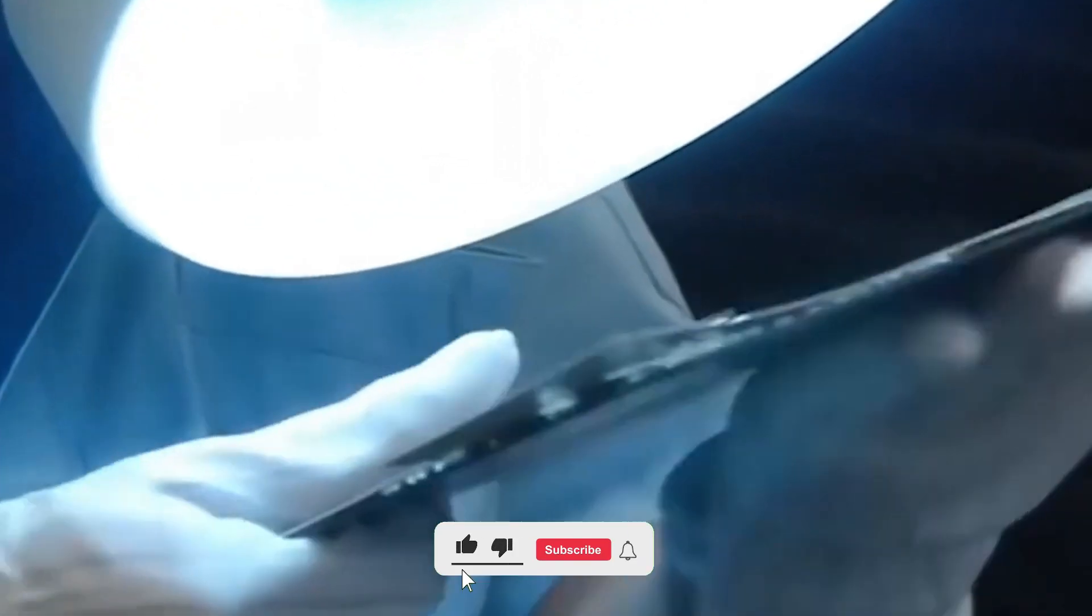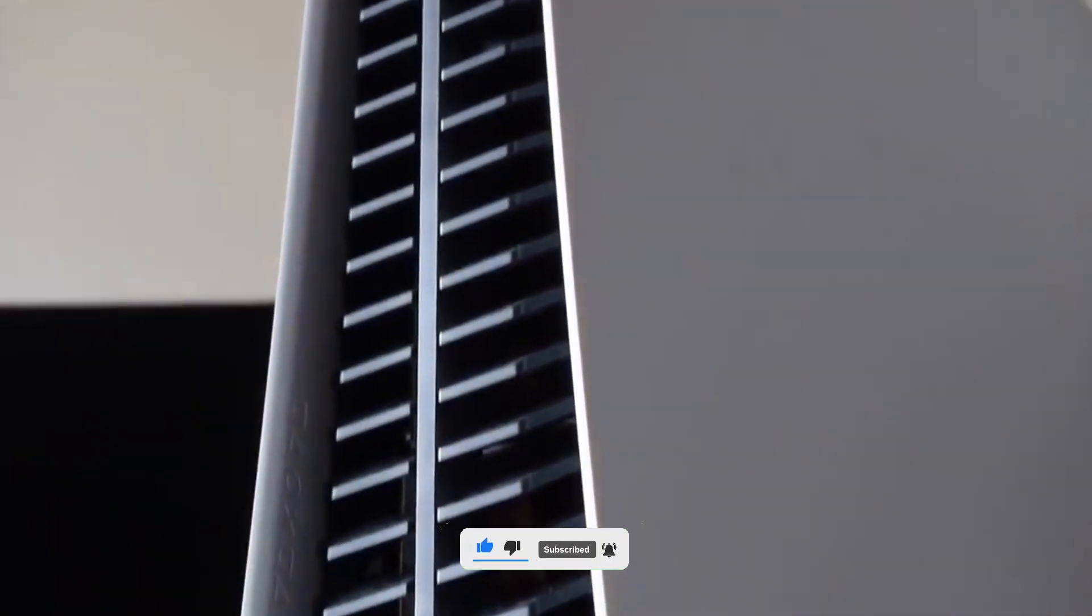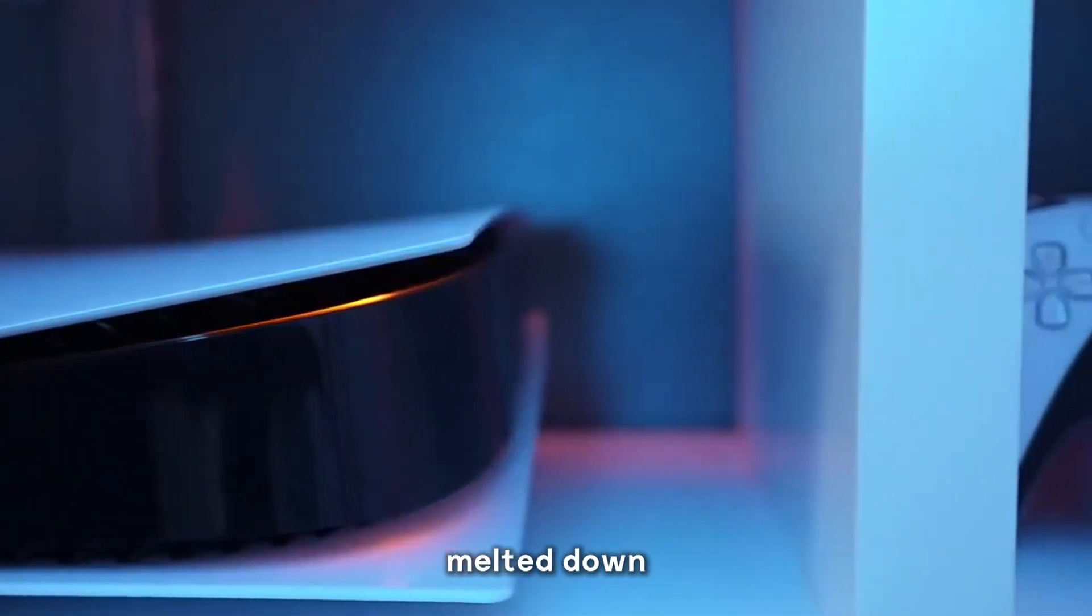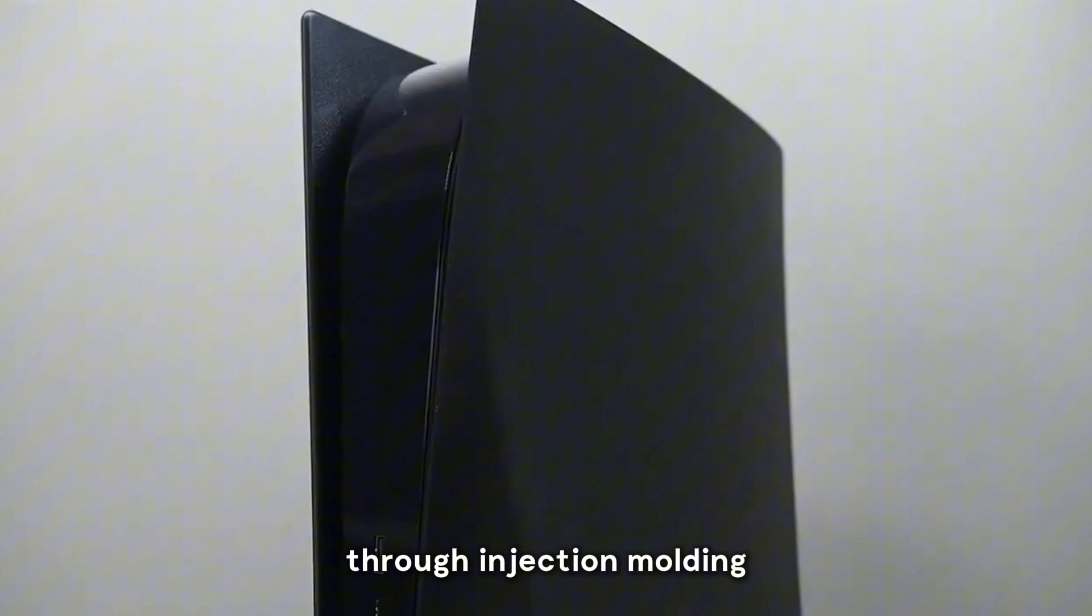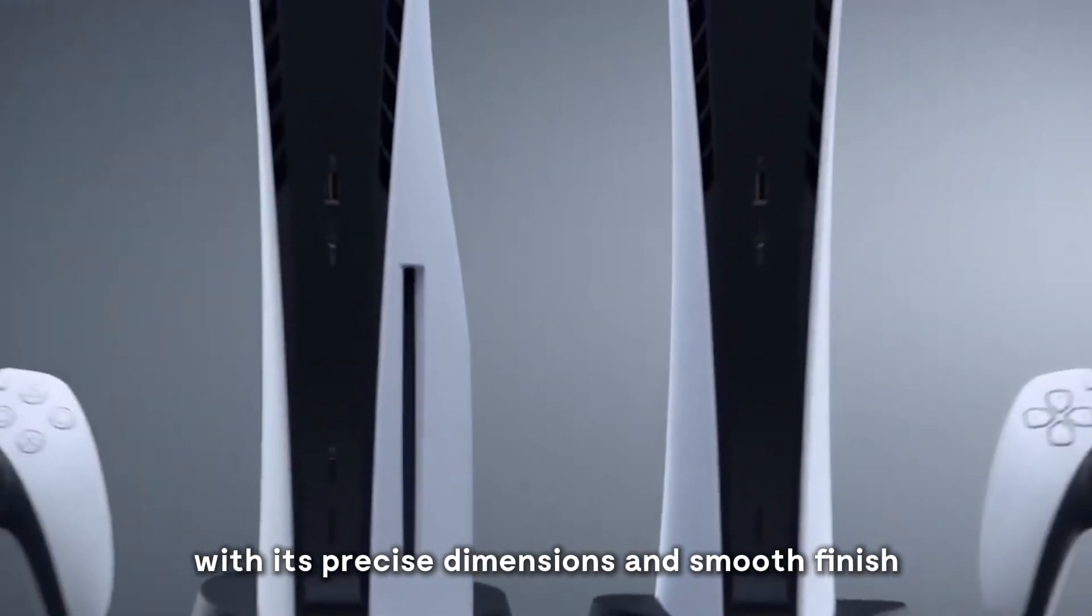While the internal components come together on one part of the line, the PlayStation's distinctive exterior takes shape elsewhere. The sleek outer shell begins as simple plastic pellets, melted down and forced under extreme pressure into precision molds through injection molding, creating the iconic PlayStation casing with its precise dimensions and smooth finish.